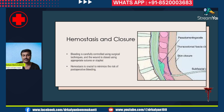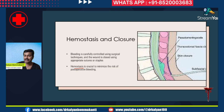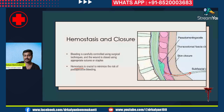Controlling bleeding is very important. Ensure perfect hemostasis so that bleeding is completely controlled, and then the wound is closed using appropriate sutures. Hemostasis is crucial to minimize the risk of post-operative bleeding. A drain is usually placed so that if there is any residual bleeding, it comes out through the drain.